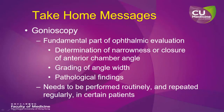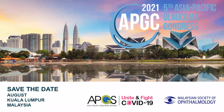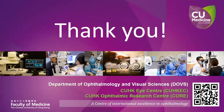Important take-home messages from this talk: gonioscopy should be a fundamental part of your ophthalmic evaluation. It helps you determine the narrowness or closure of the anterior chamber angle, grade the angle width, and identify any pathology within the drainage angle. It needs to be performed routinely and repeated regularly in certain patients. If you are interested in more glaucoma content, please note the 2021 Asia-Pacific Glaucoma Congress to be held in Kuala Lumpur, Malaysia in August — exact dates to be announced depending on the pandemic situation. Thank you very much for your time and I look forward to meeting you at one of our future congresses.